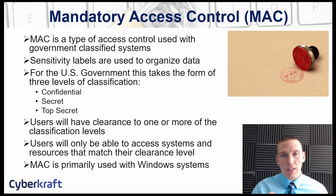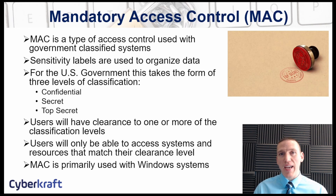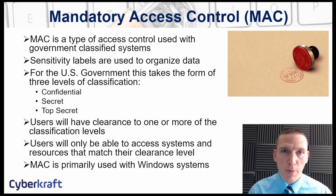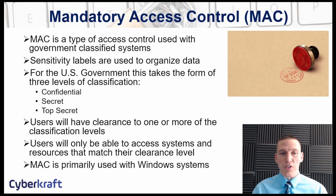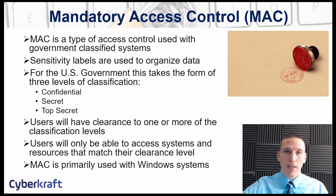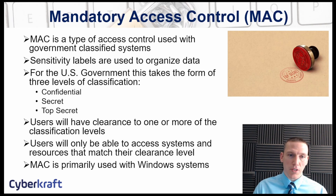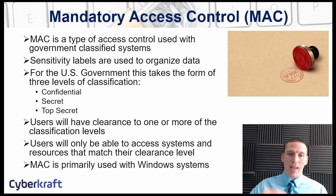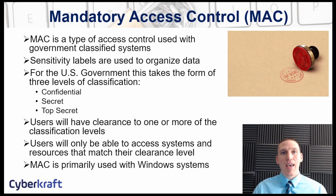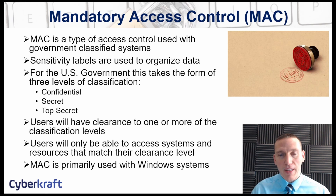Mandatory access control is a different approach, primarily used with classified information. It was initially developed by the U.S. Federal Government to manage classified information. There are three levels of classified information: confidential, secret, and top secret — those are the three main categories, along with different compartments and handling caveats. A system is classified at one of those confidentiality levels, and the access control for that system is designed around that classification level.